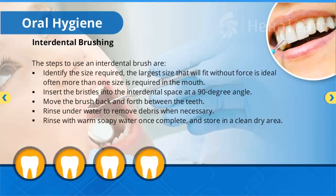Interdental brushing: the steps to use an interdental brush are — identify the size required; the largest size that will fit without force is ideal, and often more than one size is required. Insert the bristles into the interdental space at a 90-degree angle. Move the brush back and forth between the teeth. Rinse under water to remove debris when necessary. Rinse with warm soapy water once complete and store in a clean dry area.